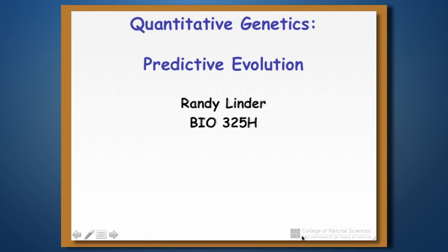This is the second in a series of three lectures on quantitative genetics. Here we're going to begin to talk about how we can actually predict evolution using quantitative genetic understanding.